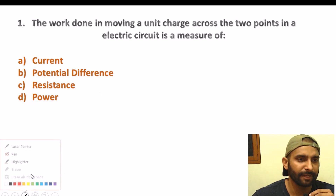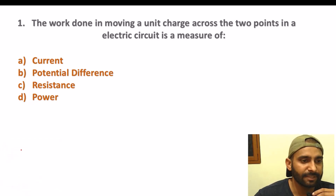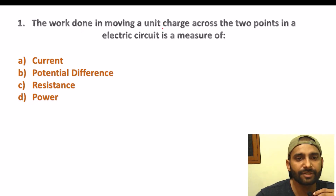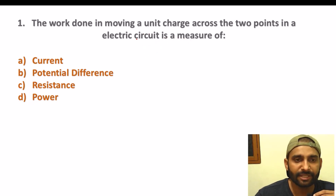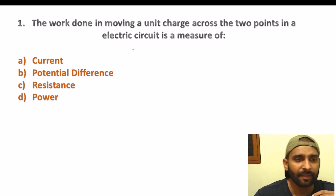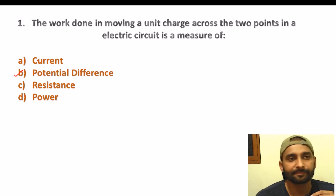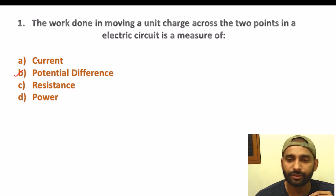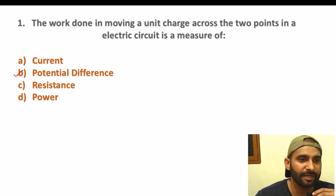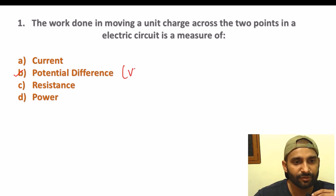Students, you can see here and tell in the comments section what the answer is if you are practicing. What is the potential difference between two points of an electric circuit? The potential difference is work upon charge — V = W/Q — which gives us the potential difference from one point to another.